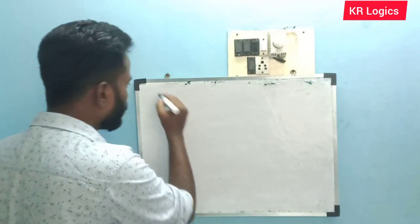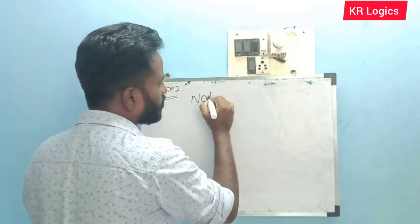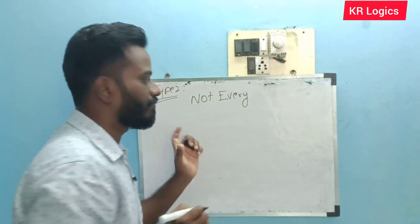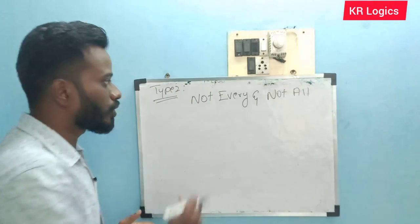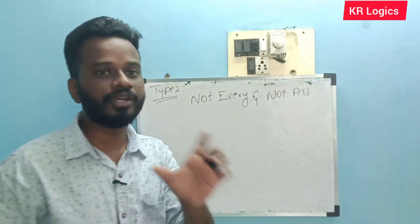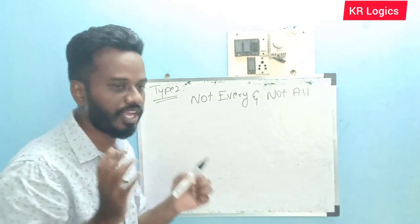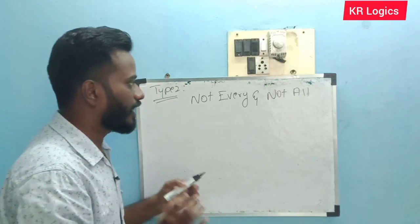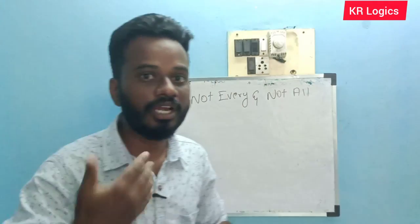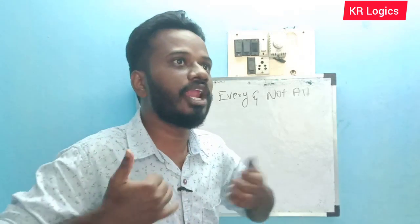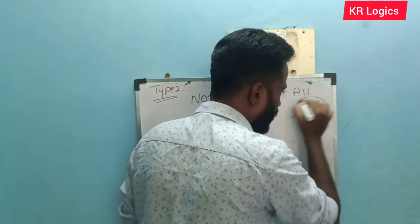Let's look at type 2. Type 2: 'Not all' — don't use all the things. This is 'not every' and 'not all' — that is a conclusion. This is why you say 'not every' and 'not all.' I will tell you: if you think 'not every' and 'not all,' every means all — every means everything.